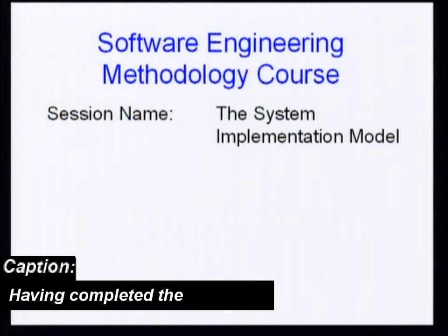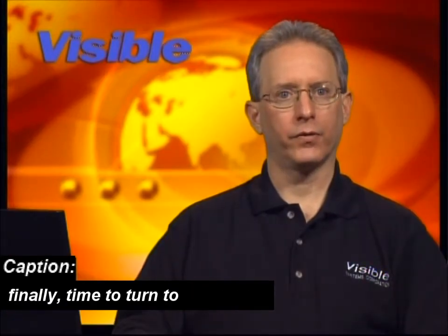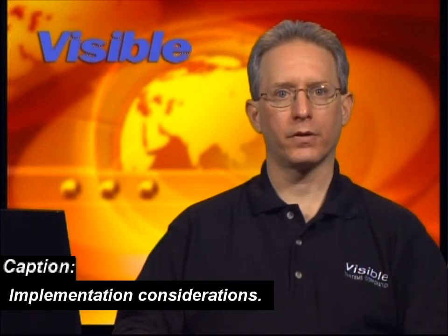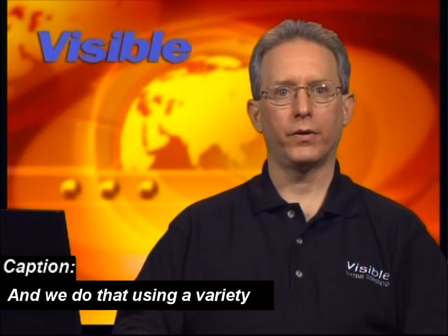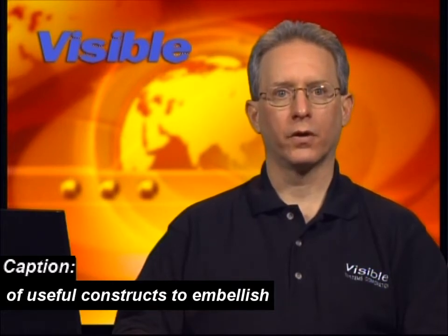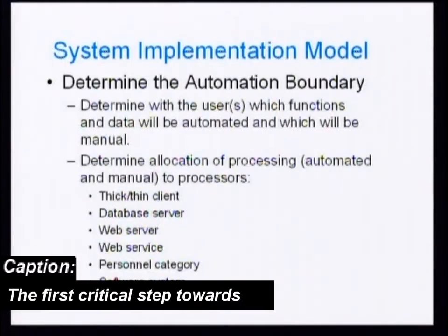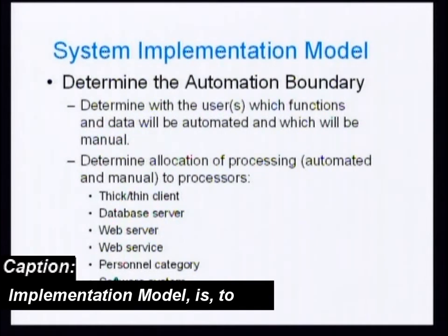Having completed the requirements model, it is now finally time to turn to implementation considerations. We do that using a variety of useful constructs to embellish the requirements model and thereby produce the systems implementation model. The first critical step towards producing the system implementation model is to determine the automation boundary.